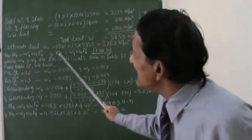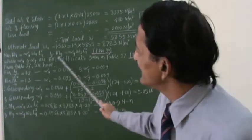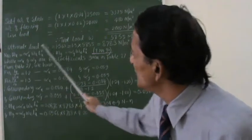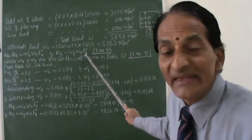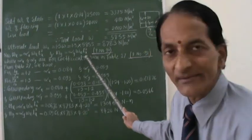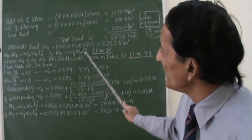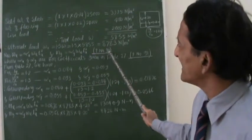Similarly, My, the bending moment in the longer span, it is given by alpha y. Instead of alpha x is alpha y. wu will remain as it is. And Mx, it is not Ly square. It is Lx square. So this My is alpha y wu Lx squared.